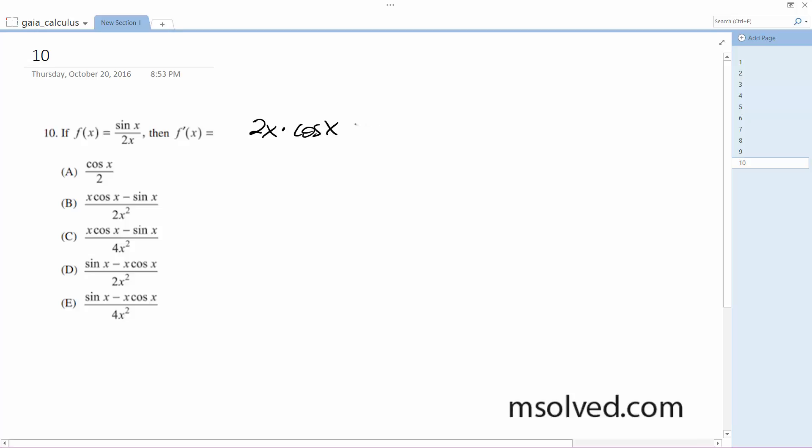x minus the derivative of the bottom, which is 2x, and I have sine x. The bottom is 2x all squared, so I get 4x squared.